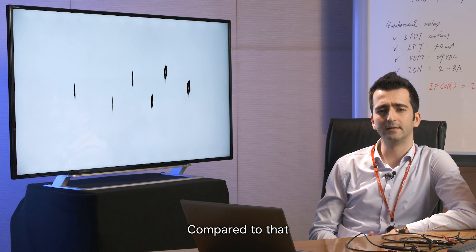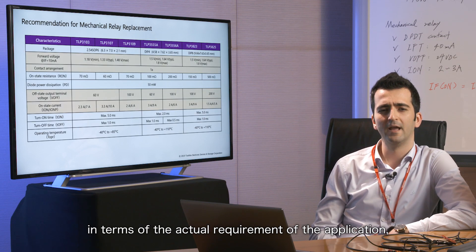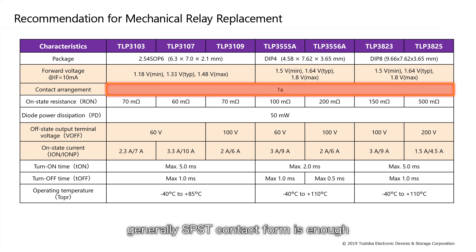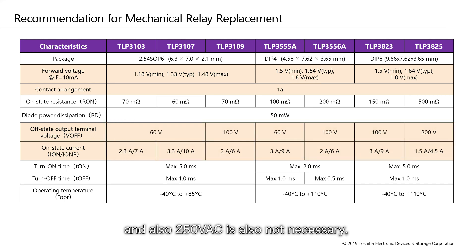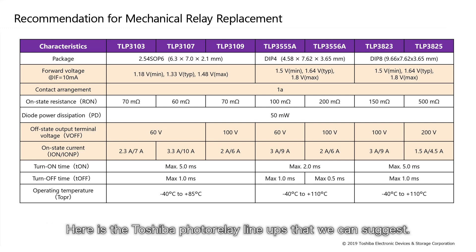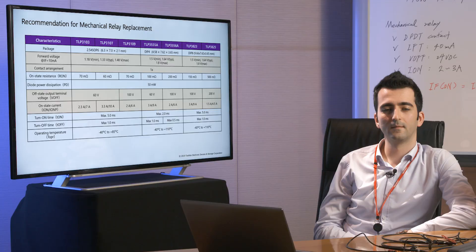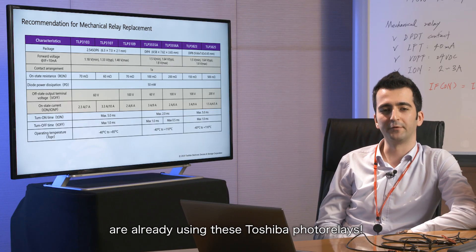Compared to that, in terms of actual requirements of an application, generally an SPST contact form is enough, and 250V AC is also not necessary. A photo relay can address the needs of an indoor thermostat application, and here is the Toshiba photo relay lineup that we can suggest. Many well-known thermostat suppliers are already using these Toshiba photo relays.